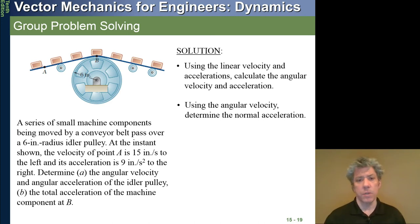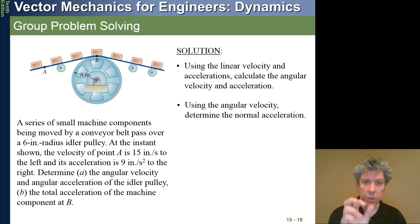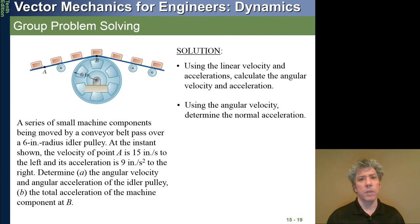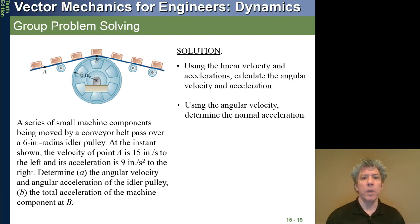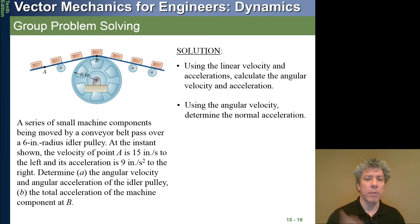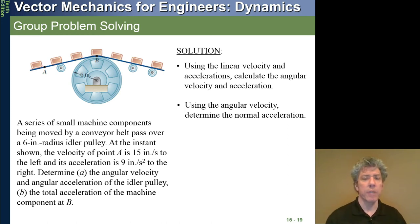Since we know the tangential acceleration - they gave it to us as 9 inches per second squared - all we do is take that and divide by the radius 6 inches to get angular acceleration alpha. Students often get confused about the units: for angular velocity you get 1 over seconds, and for angular acceleration 1 over seconds squared. Radians can be thrown in or pulled out whenever needed, so this gives angular velocity in radians per second and angular acceleration alpha in radians per second squared.